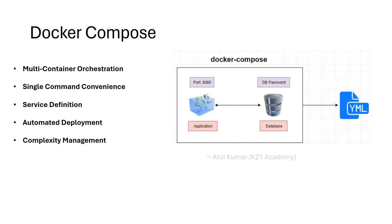Docker Compose is a tool that helps you define and run multi-container Docker applications. With a single command, you can create and start all the services defined in a Docker Compose YAML file. This file specifies the service definition, explaining which images to use, how containers should interact, what ports they should use, and where data should be stored. Docker Compose automates the deployment of applications that consist of multiple interconnected containers. It is optional for simple single-container applications, but very useful for complex applications with multiple Docker images and containers.